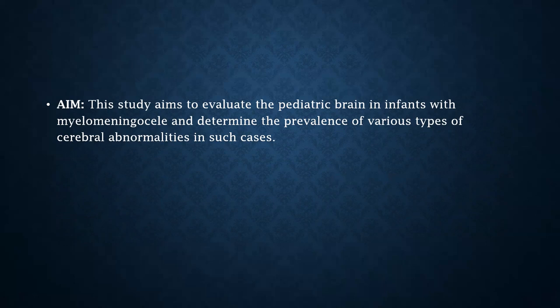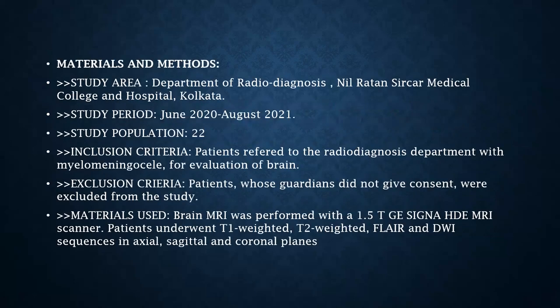Our aim was to evaluate the pediatric brain in infants with myelomeningocele and determine the prevalence of various types of cerebral abnormalities. The study was conducted in the Department of Radiodiagnosis, from June 2020 to August 2021, with a study population of 22 patients. Brain MRI was performed with a 1.5 Tesla GE Signa HD MRI scanner; patients underwent T1-weighted, T2-weighted, FLAIR, and DWI sequences in axial, sagittal, and coronal planes.